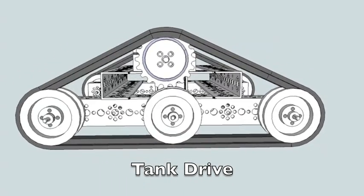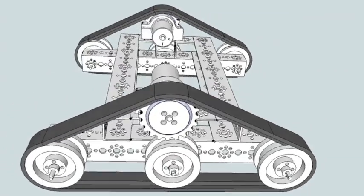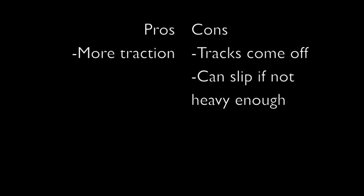The next is tank drive. Honestly, I've seen more teams use these parts for conveyor belts than for their drivetrain. Probably because the tracks could come off and then you'd have a very difficult time moving.